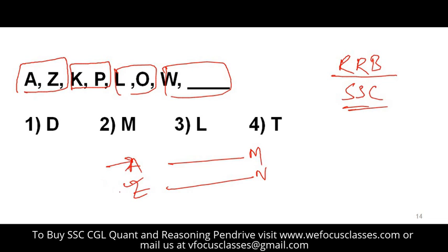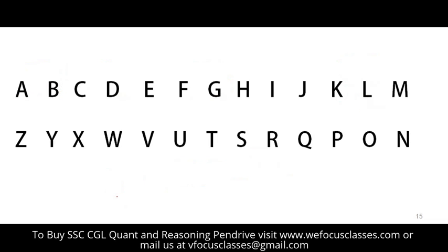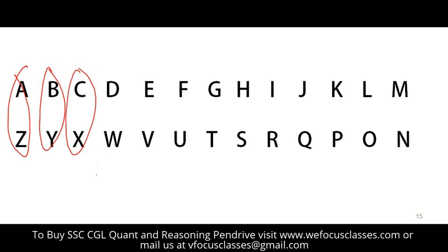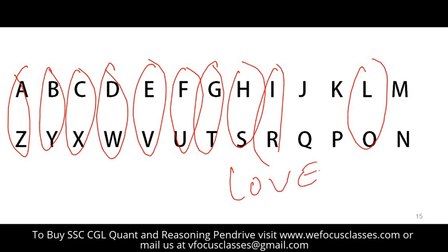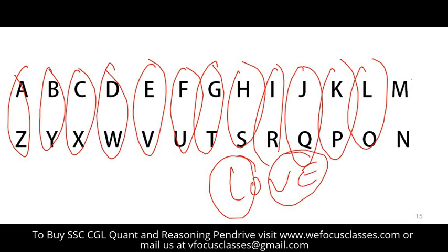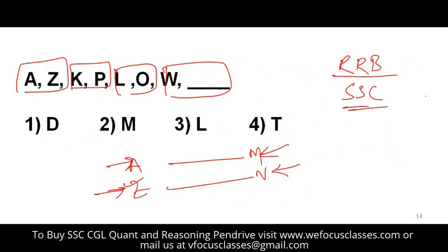These are complementary pairs — if you write letters A to M and N to Z, A pairs with Z (first from beginning, first from ending), and so on up to M and N. To remember them: AZ like 'Azhar,' BY like 'Boy,' CX like 'Crux,' DW like 'Dosa-Wada,' LO like 'Love,' KP like 'Kevin Peterson,' JQ like 'Jackie Queen.' So for the problem with W-blank, W pairs with D (Wada-Dosa), so the answer is D.